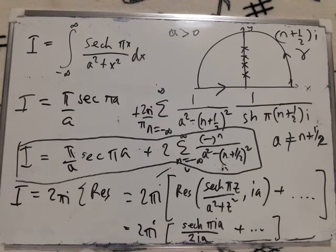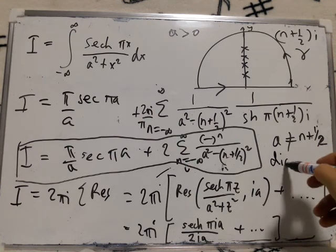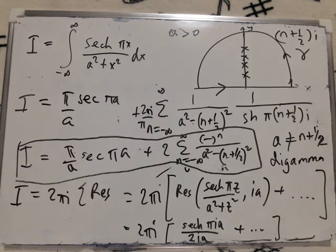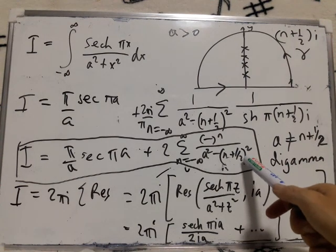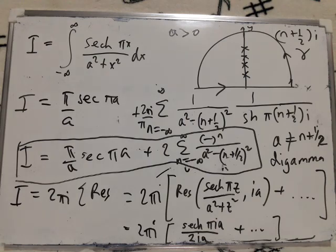It turns out that in this case you can evaluate this sum, but not in terms of functions that you already know about. It can be expressed in terms of something called not the gamma function, but the digamma function. So this is all we can do at this stage. We can convert this integral into an infinite sum. That's the best we can do without using this special function which we can express this sum in terms of.